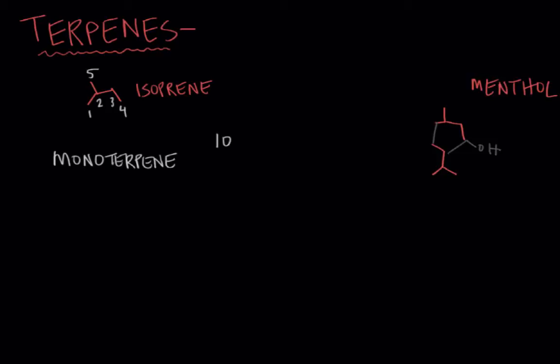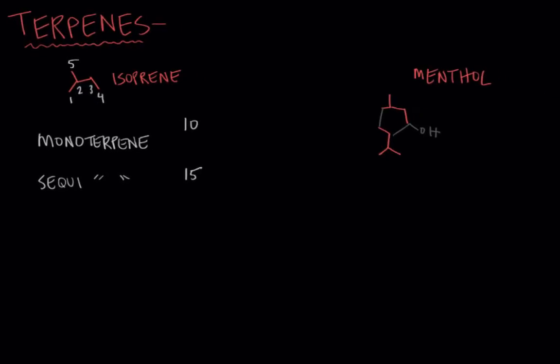And then if you add one more isoprene, you'd have 15 carbons, and that would give you three units of isoprene, and we'd call it a sesquiterpene. And one example of a sesquiterpene is ginger, and ginger looks like this. But you can see that ginger is made up of three isoprene units, and it fills up ginger snap cookies, and those are my favorite types of cookies. And so really you can just keep adding these isoprene units and making larger and larger molecules. And so I'll just go ahead and make a chart here.